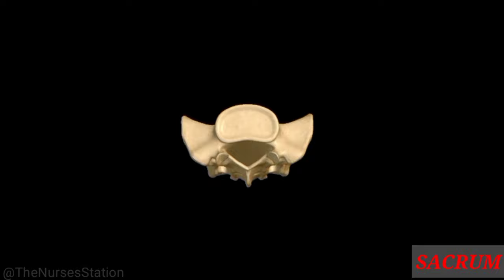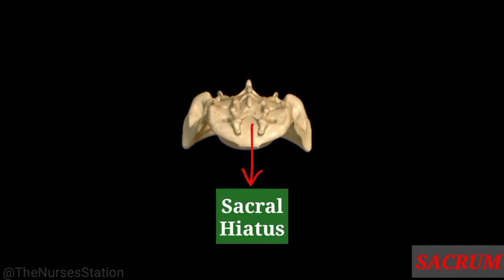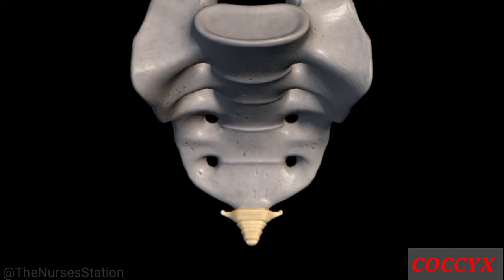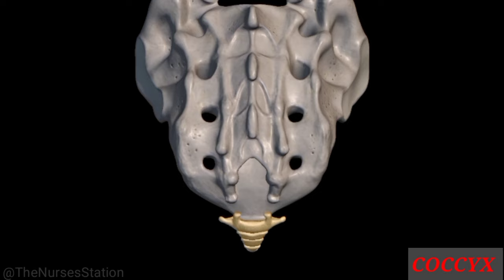The laminae of the fifth sacral vertebra, and sometimes the fourth, fail to meet, leaving an inferior entrance to the vertebral canal called the sacral hiatus. On either side of the sacral hiatus is the sacral cornua. The next bone inferior to the sacrum is the coccyx, a triangular bone formed by the fusion of usually four coccygeal vertebrae, Co1 to Co4. The dorsal surface contains two long coccygeal cornua connected by ligaments to the sacral cornua.